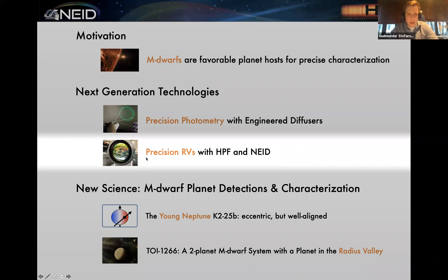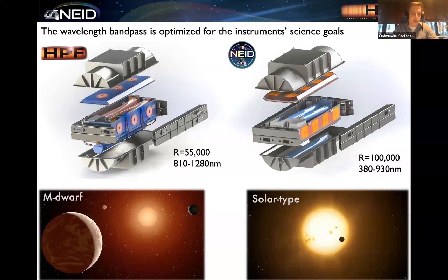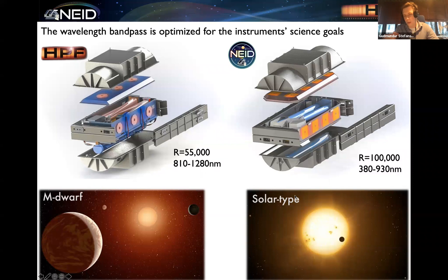Let's dive right into the RVs with HPF. I'm part of the instrument and science teams for two different spectrographs: the Habitable-zone Planet Finder on the left, which we relatively recently installed on the 10-meter Hobby-Eberly Telescope in Texas; and the NEID spectrograph on the right, which we are actively finishing commissioning on the 3.5-meter telescope at Kitt Peak. The main science goal of HPF is to carry out a survey of nearby bright M dwarfs in the near infrared to look for exoplanets in the habitable zones around mid-to-late M dwarfs within 25 parsecs or so. The main science goal of NEID is to focus more on detecting and characterizing terrestrial planets around solar-type stars.